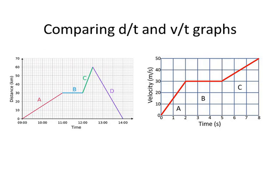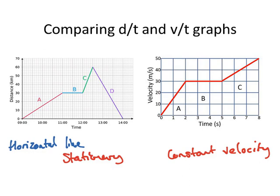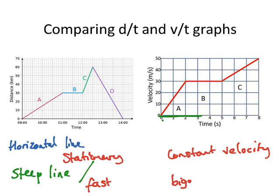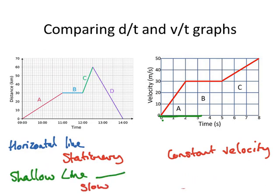Let's compare distance-time graphs to velocity-time graphs. A horizontal line on a distance-time graph means stationary, but on a velocity-time graph it means constant velocity. A steeper line on a distance-time graph means an object is going fast; on a velocity-time graph it means a big acceleration. A shallow line on a distance-time graph means travelling slower; on a velocity-time graph, a smaller acceleration.